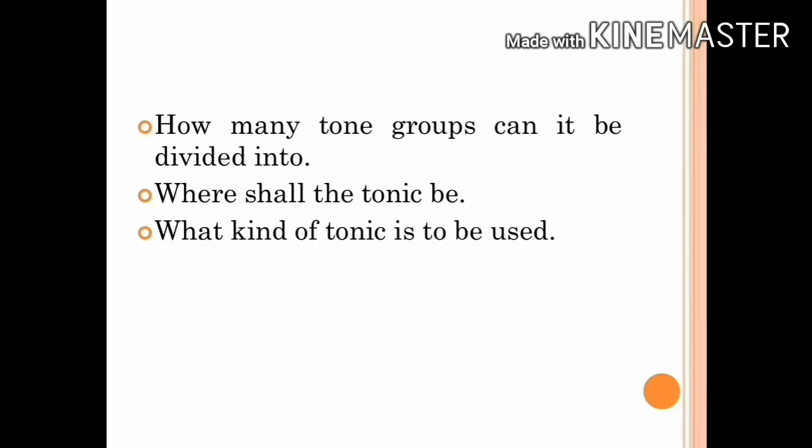Before one can go any further into the study of intonation, one has to decide three things about an utterance. First of all, how many tone groups can it be divided into? That is, the choice of tonality. Then, where shall the tonic be? That is, the choice of tonicity. And then, what kind of tonic has to be used? That is, the choice of tone. Now let's analyze these three things one by one.